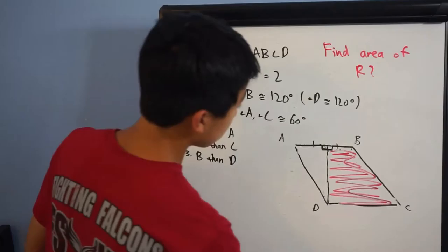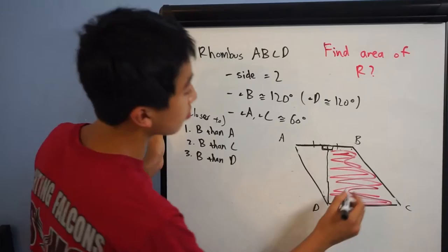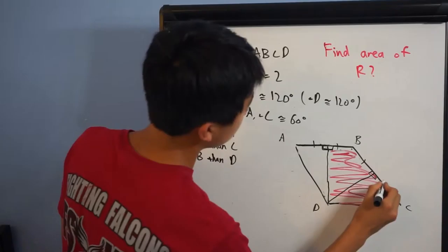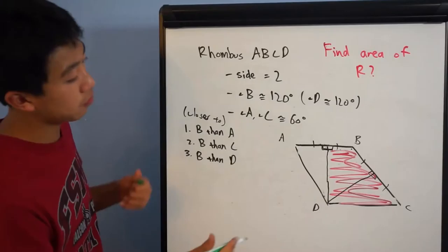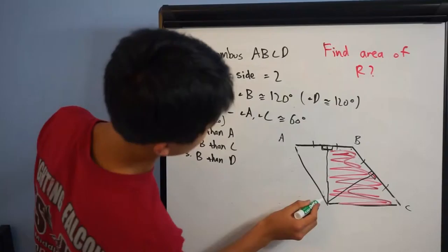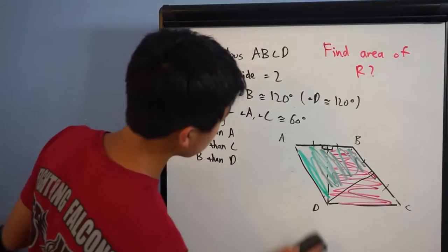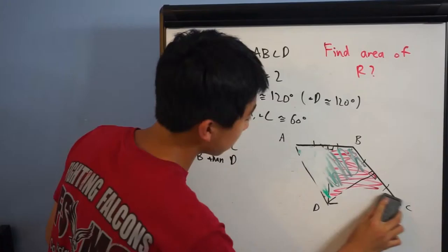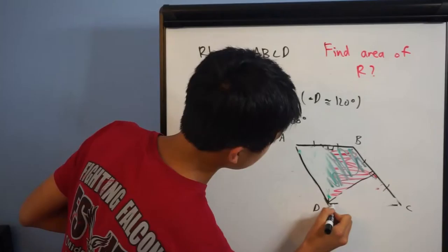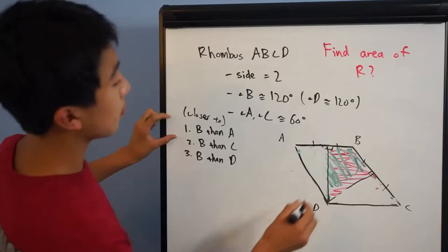Now we do number two: the set of points closer to B than C. Again, we draw the perpendicular bisector, and since this is an equilateral triangle, it also meets at point D. This line is perpendicular and bisects BC. All the points closer to B than C would be on the left side — the B side of this perpendicular bisector. Right now, the intersection of sets one and two gives us this kite shape.